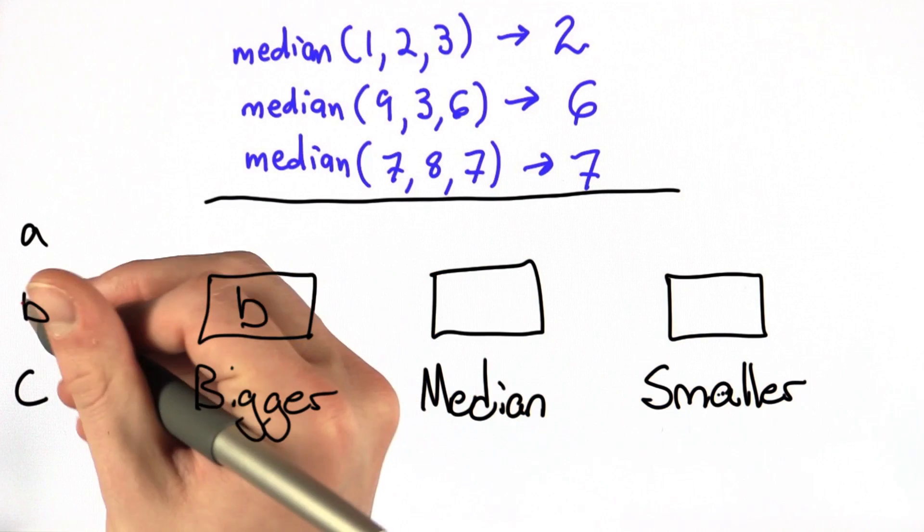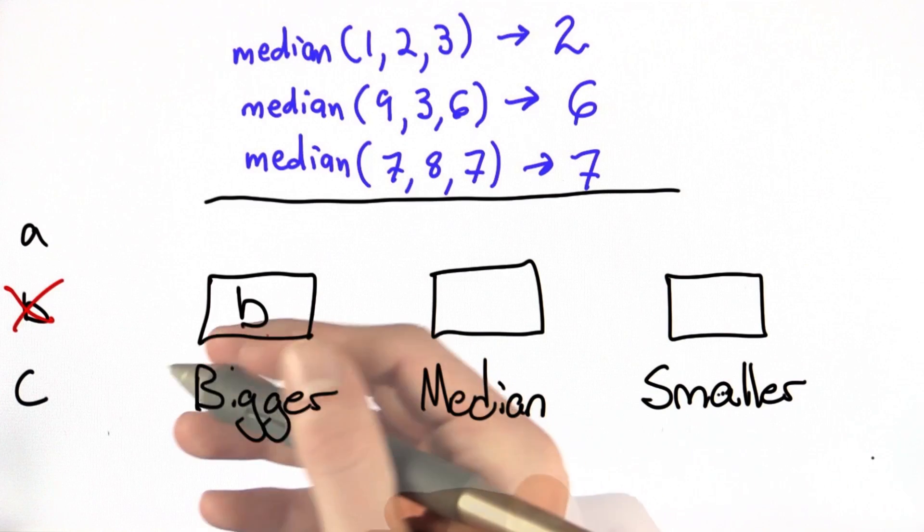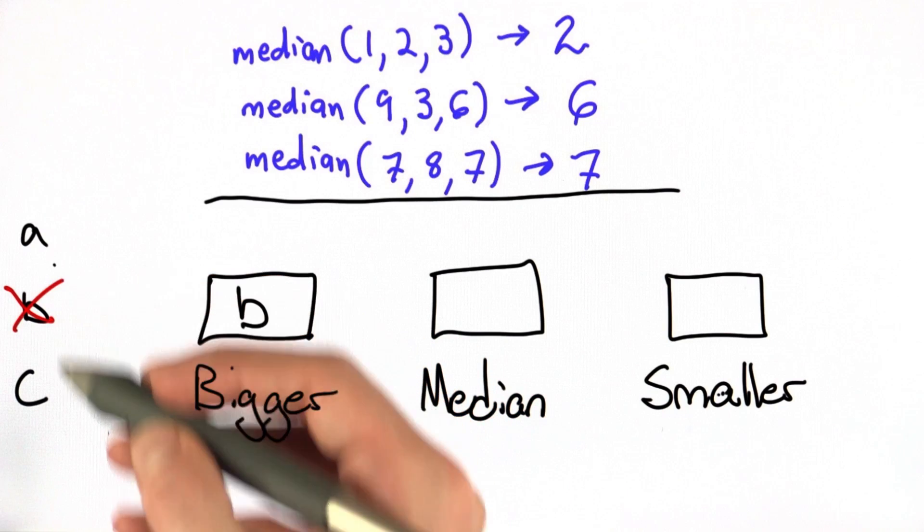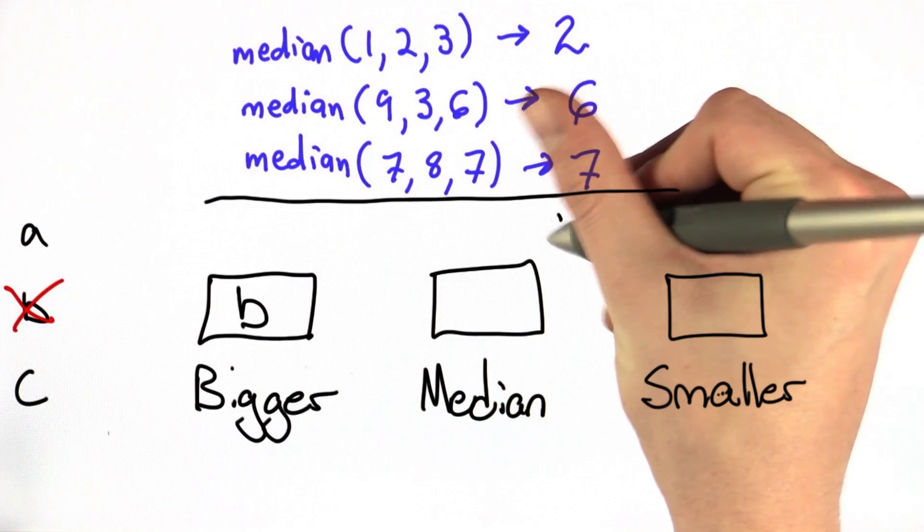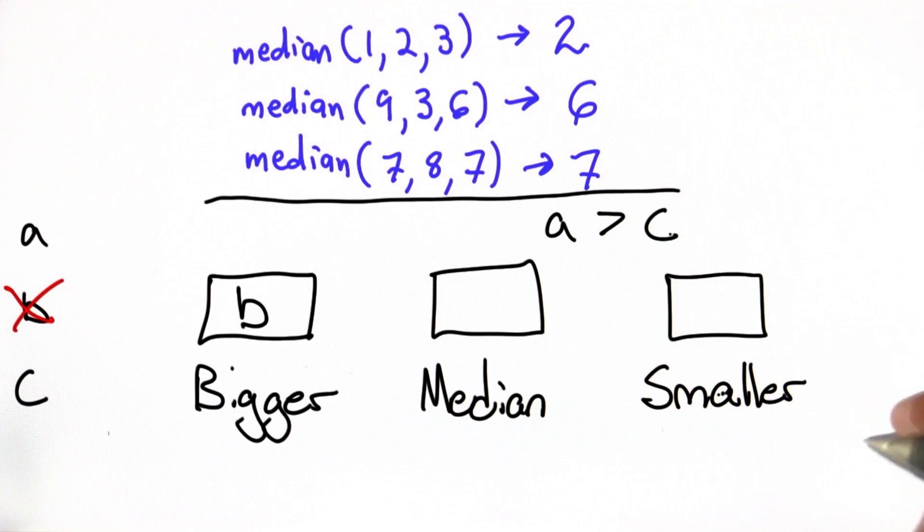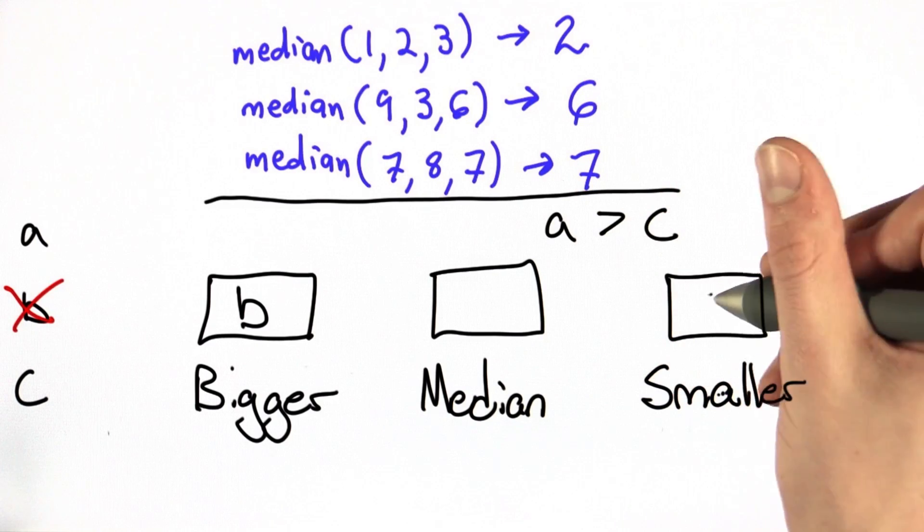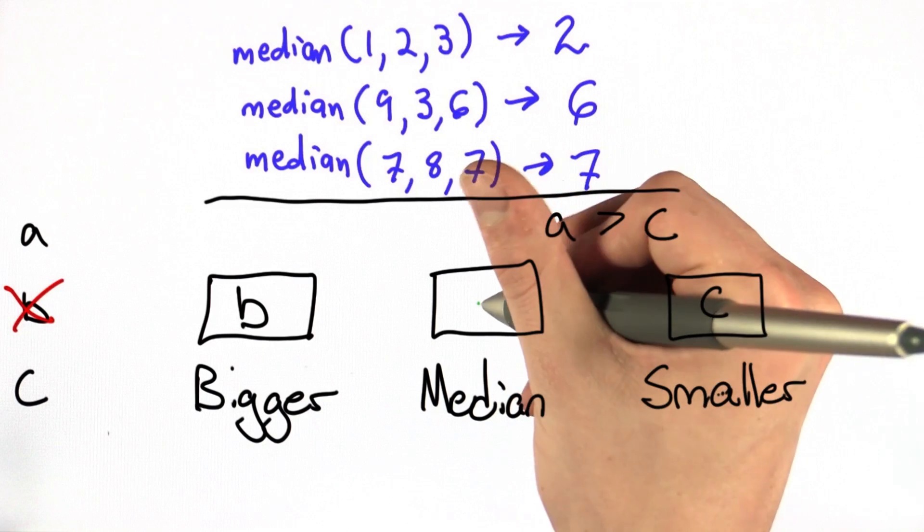We know B can't be the median because we decided that it was the bigger number. From here, all we have to do is compare A and C. There are two cases at this point. One is where A is greater than C. If A is greater than C, we know C is the smaller number, and A is the median.